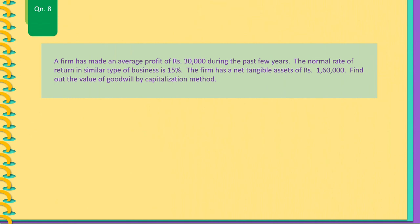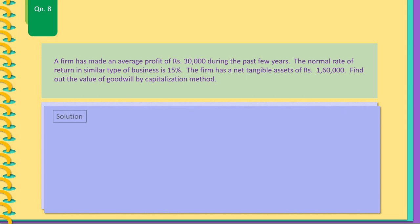Question 8: A firm has made an average profit of Rs. 30,000 during the past few years. The normal rate of return in a similar type of business is 15%. The firm has net tangible assets of Rs. 1,60,000. Find out the value of goodwill by the capitalization method. Capitalized value of profit equals 30,000 into 100 by 15, which equals Rs. 2 lakh.